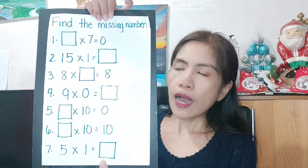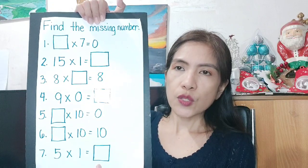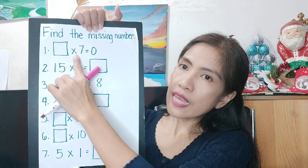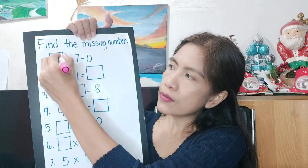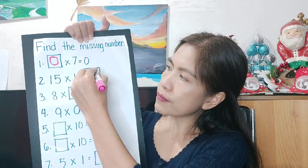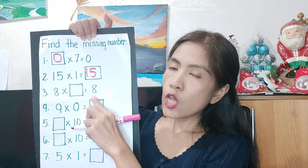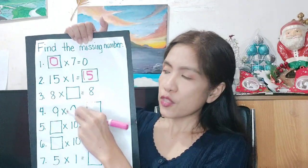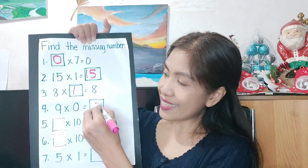Let's have a drill to see if you understand today's topic. We need to find the missing number. First: blank times 7 equals 0 — the missing number is 0. Next: 15 times 1 — the product is 15. Then: 8 times blank equals 8 — the answer is 1. Next: 9 times 0 — the answer is 0. And: blank times 10 equals 0 — the missing number is 0.